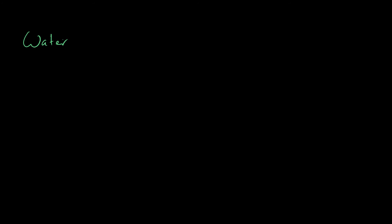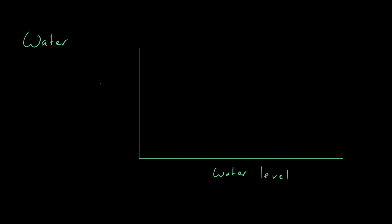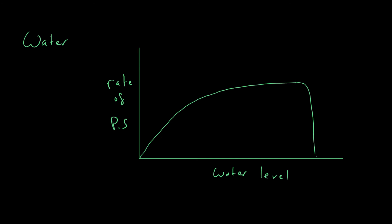Another limiting factor is water. Obviously if you have no water, the plant is going to die and you won't have photosynthesis. If we put water level on the x-axis and rate of photosynthesis on the y-axis, it's much the same shape: as you increase the amount of water, photosynthesis goes up, but after a while it plateaus because you've got enough water. If you increase the water by too much, we might actually see it drop because you've drowned the plant. For the most part, you will see the plateau shape.